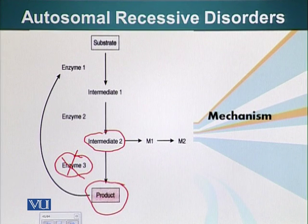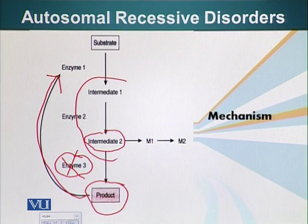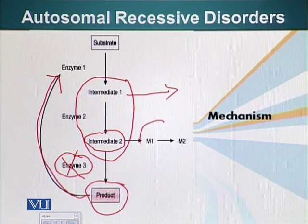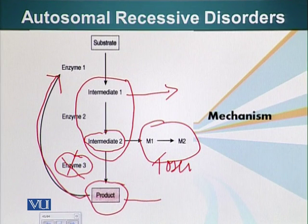The second reason enzyme mutations can cause disease: the product normally inhibits enzyme 1, the commitment step in this process. Once enzyme 1 converts the substrate into intermediate 1, the process must follow through. If it doesn't, intermediates 1 and 2 can be shunted into side metabolic pathways and result in toxic byproducts. These toxic byproducts can also result in cell injury and disease. So the two mechanisms are: absence of the required product, and production of toxic material from the intermediates.